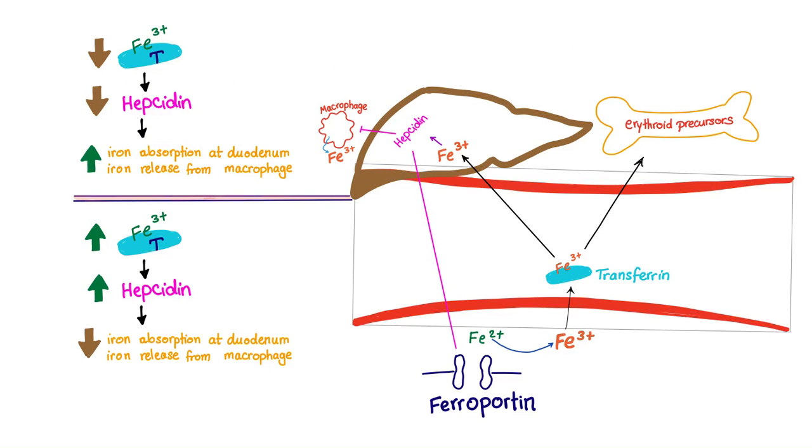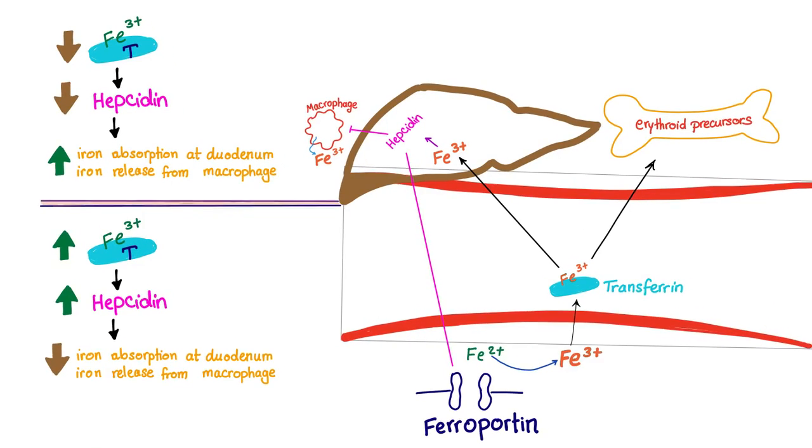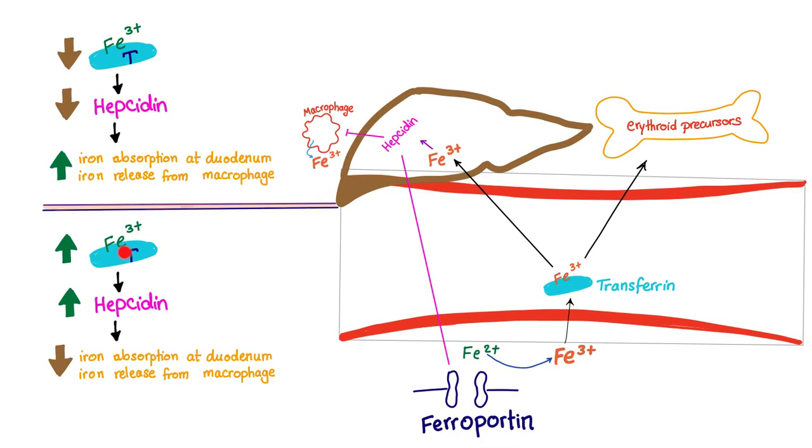Let's focus more about the hepcidin and the regulation of iron absorption. When we have a lot of iron coming in on the transferrin, hepcidin gets stimulated and upregulated, the liver forms more hepcidin to stop iron absorption in the duodenum and to stop iron release from the macrophage. The opposite is also true. When iron on the transferrin is less, hepcidin is downregulated, less hepcidin is formed. So there is increased iron absorption, increased iron release. Because there is no inhibitor, I'm free to absorb and release more iron. So the serum iron increases.